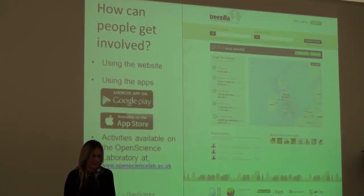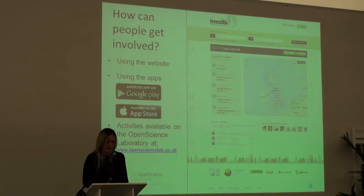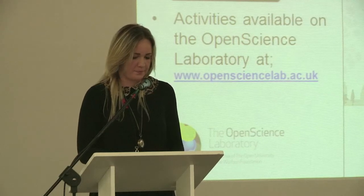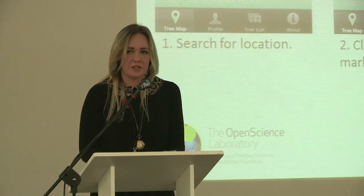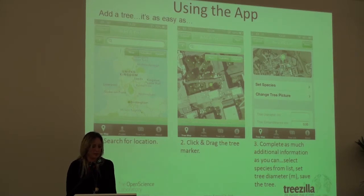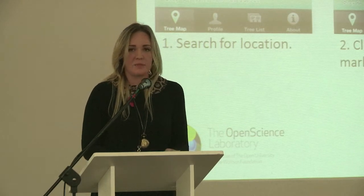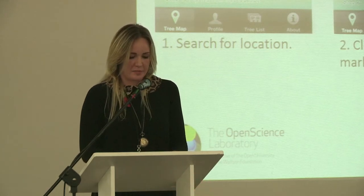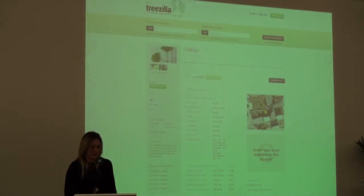So how can people get involved? They can get involved by using the website or by using the apps — we have apps available for iOS and Android platforms. There are also a number of activities on the Open Science Laboratory website, which is a project of the Open University and is an online platform for practical science applications. To use the Treezilla app, it's very simple. First of all, you just need to search for your location — quite often mobile devices will have GPS built in, so it will do that for you if you're using it on an iPhone, for example. You then drag the tree marker to the correct location and enter as much information as you can about the tree. The key information to be entered is the species and diameter at breast height. Anything entered on the app is also viewable on the website and vice versa.